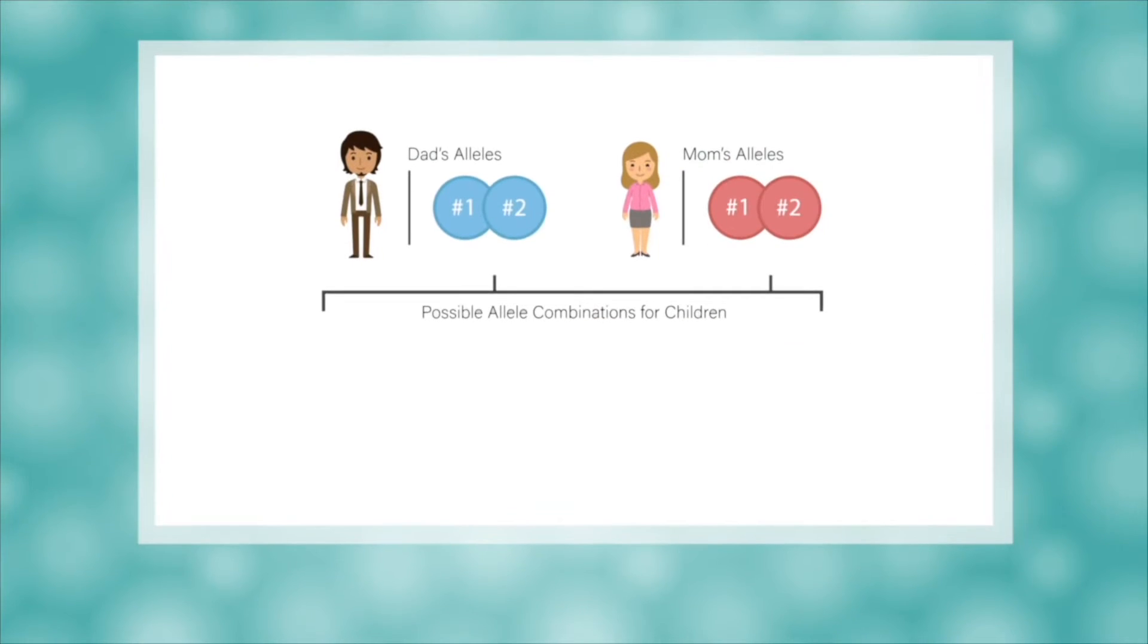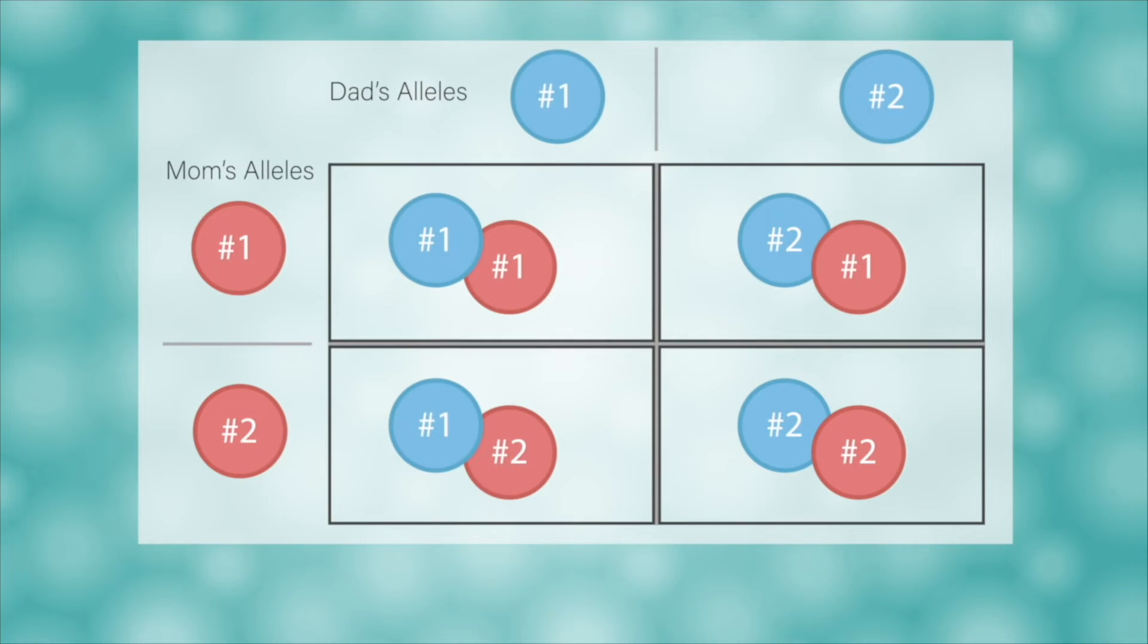For now, we'll number the alleles one and two. The offspring could get allele one from dad and allele one from mom, or allele one from dad and allele two from mom. They could also get allele two from dad and allele one from mom, or allele two from dad and allele two from mom. So there are four total combinations of alleles that an offspring could get.